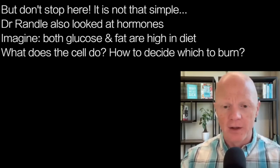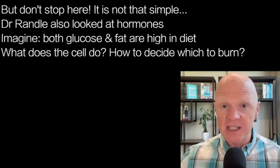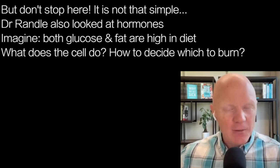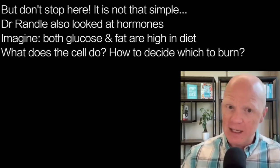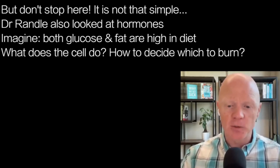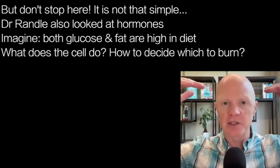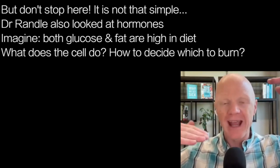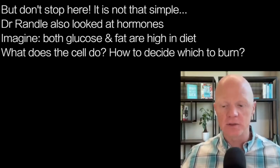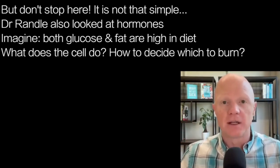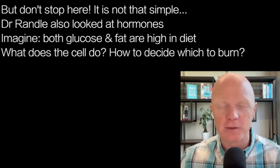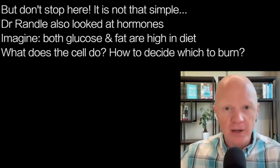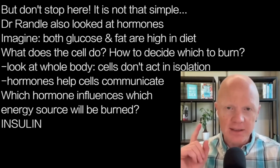Where people stop there, they've done a disservice not only to anyone listening to them, but even to Dr. Randle and his colleagues, because they went further and looked at the role of hormones. Imagine a situation where both substrates are high — both calorie sources are elevated. Imagine the person has both high glucose levels and high free fatty acids. How does the cell know what to do? Does it just give up and say it can't choose? How does it decide what happens when both are elevated?